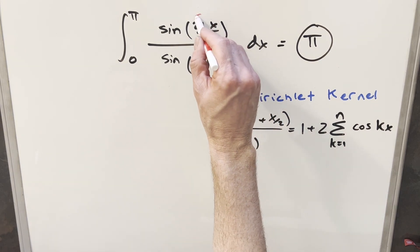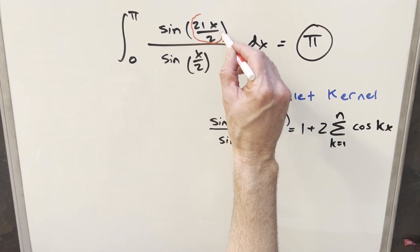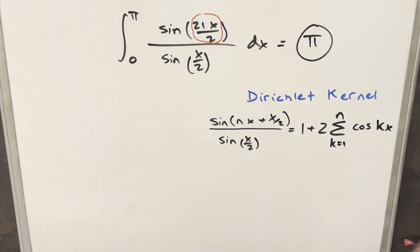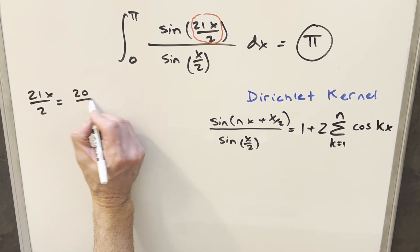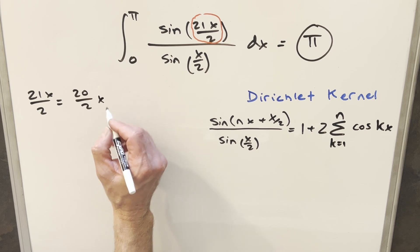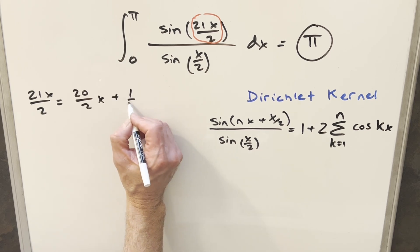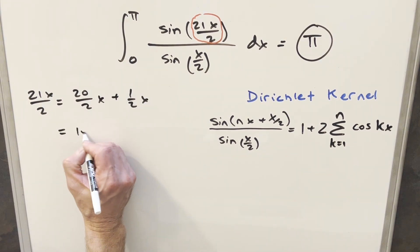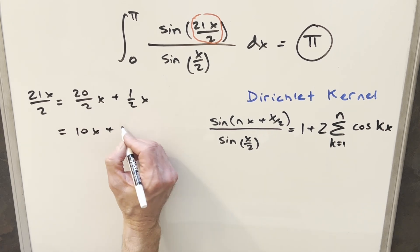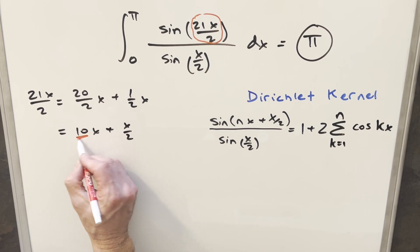So to start with, if I just focus on this 21x over 2, I can split that up. I can break this up and write it as 20 over 2x plus 1 half x, but then 20 over 2, I can write this as 10x plus x over 2. So now this is exactly in this format over here, where the n value is going to be just equal to 10.